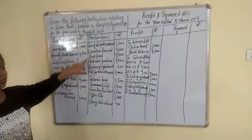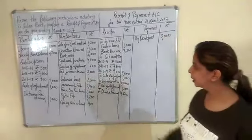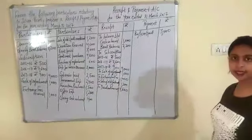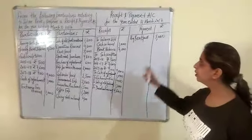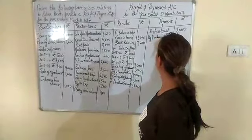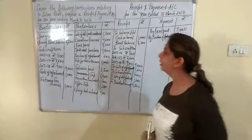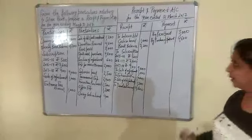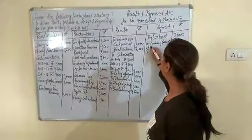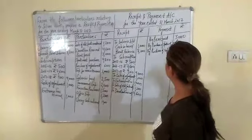Rent paid is a payment, so it is recorded on the payment side. We write here 'By Rent Paid', which is rupees 3,000. Then we purchase sports material — when we purchase anything, that time we pay money, so it is recorded on the payment side: 'By Purchase of Sports Material', rupees 4,800. Then we purchase refreshment, also on the payment side: 'By Purchase of Refreshment', which is rupees 600.